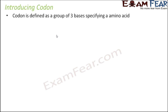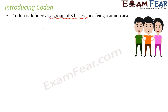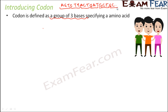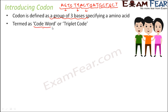A codon is defined as a group of three bases which specifies an amino acid. So three bases together will code for one particular amino acid. If you have a long sequence, just divide it into groups of three and then you can determine which amino acid it will code for. This group of three is known as a codon — also known as a code word or triplet code, because three of them are there.